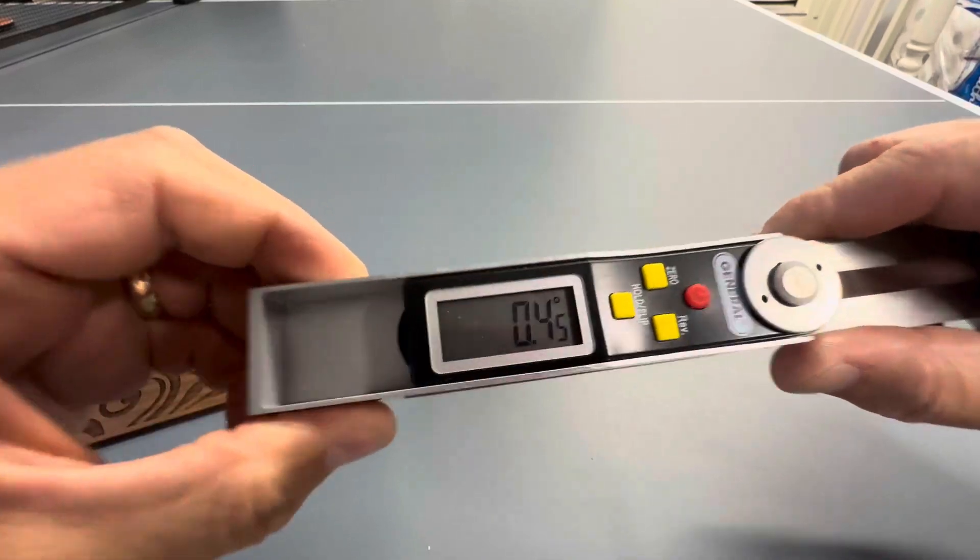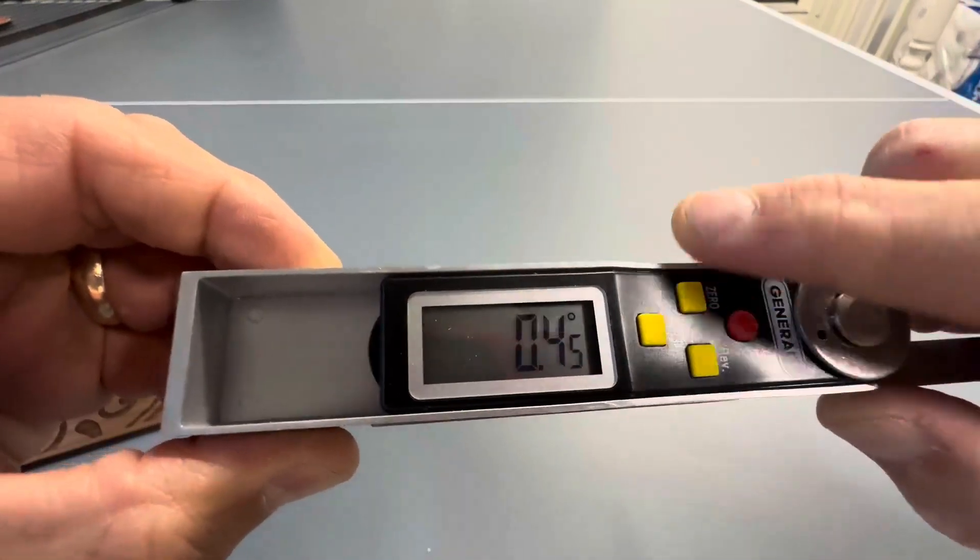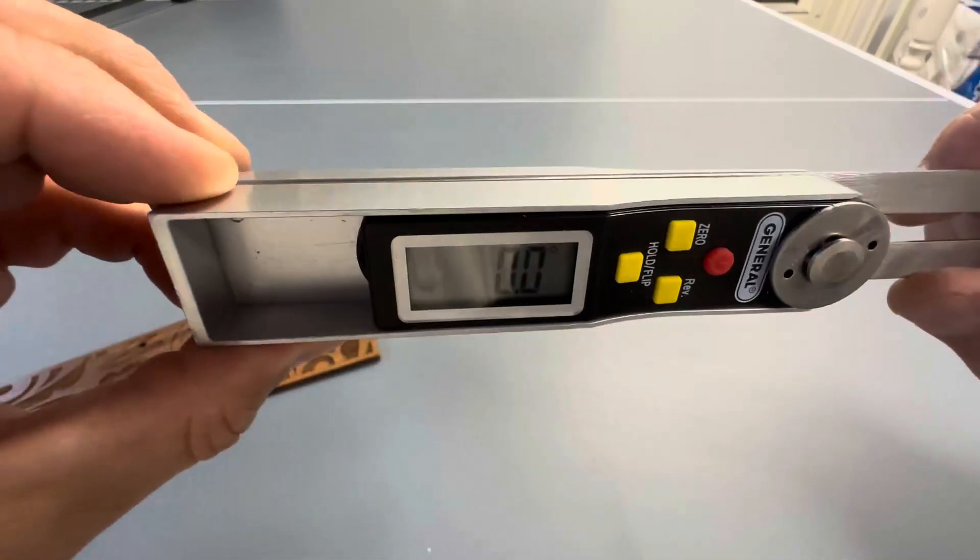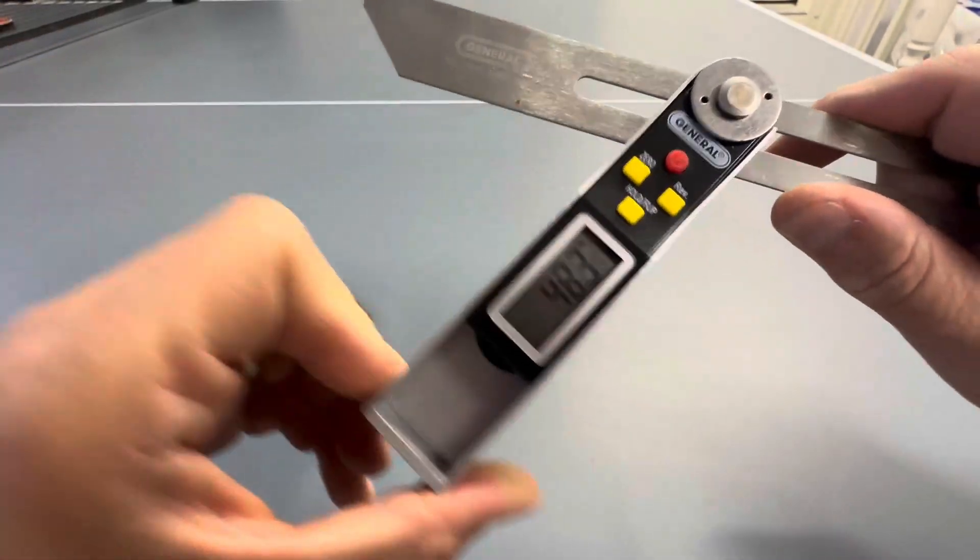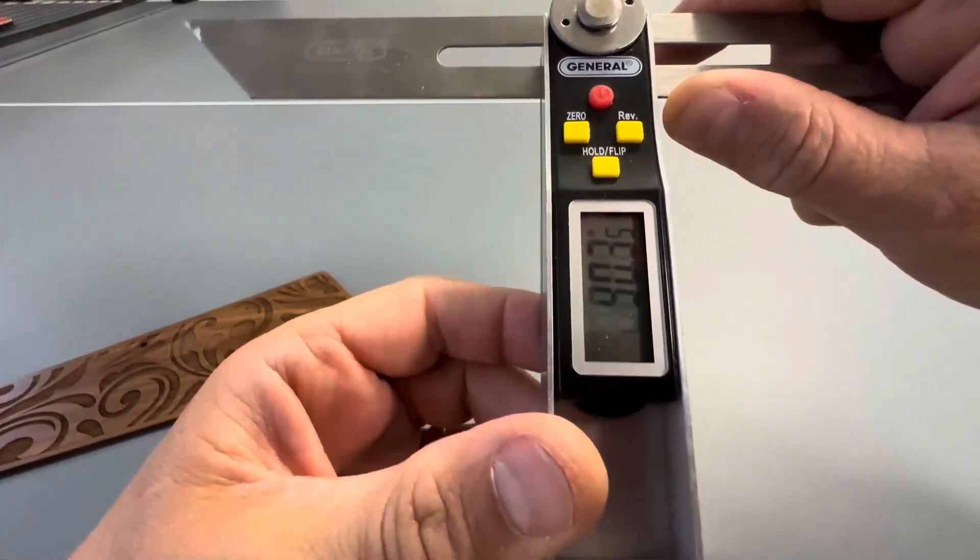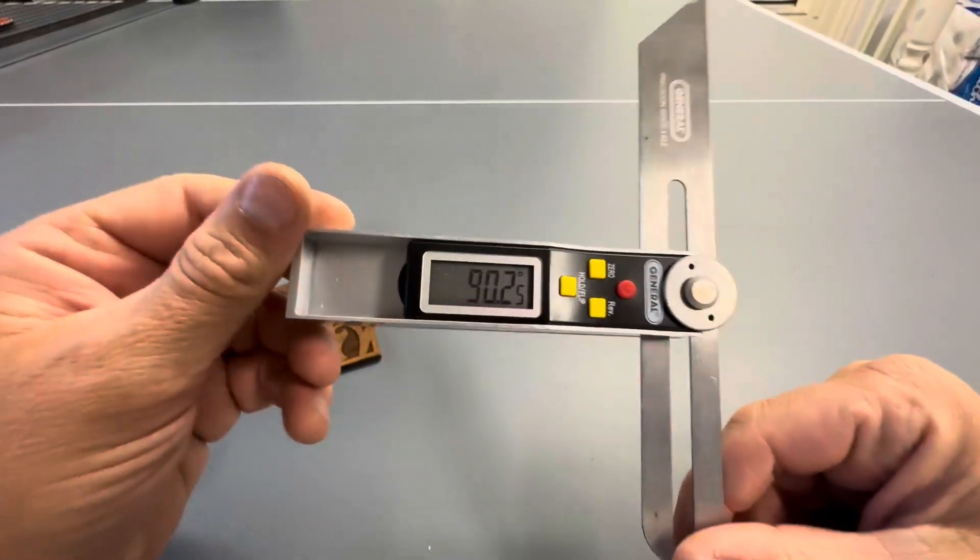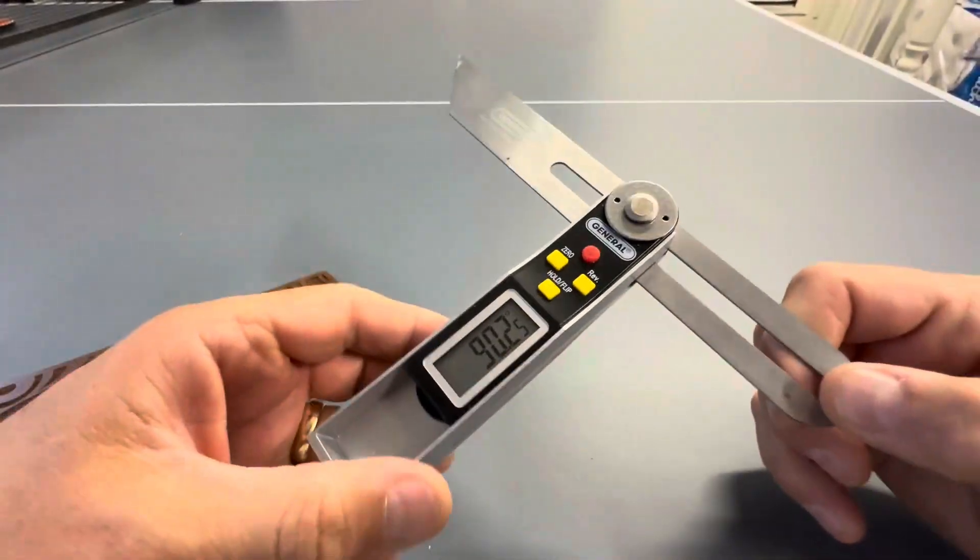But first what you want to do is set it at zero. So right now you see I'll push zero and now you have zero. So now it's set to zero, you can open it up and look, that's about a 90 degree, right? So there you have 90.2, that's a 90 degree.